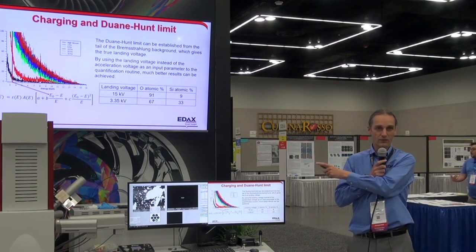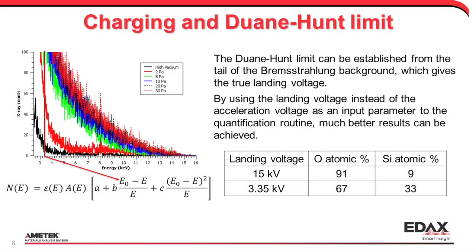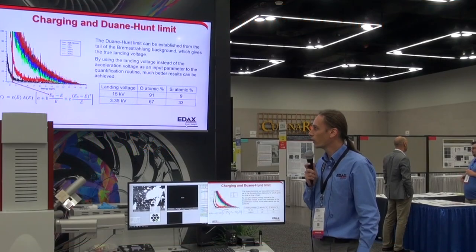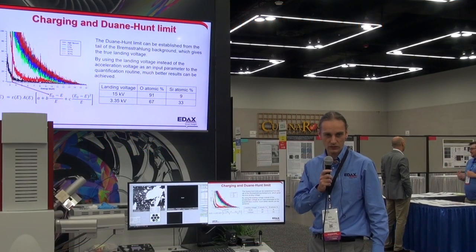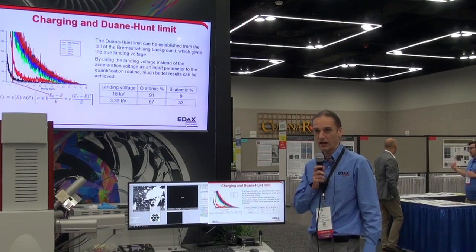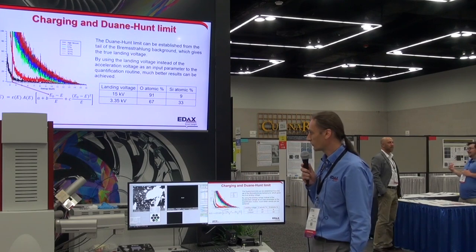If I tell our quantification model that I don't have 15 kilovolts but 3.35 kilovolts — because as we can see from the spectrum that's the Duane-Hunt limit — all of a sudden I get reasonable quant numbers: silicon dioxide at 66/33. So 3.35 kilovolts is around where my actual landing voltage is, not the 15 we thought we had based on the actuation voltage. And you can easily see this just by looking at the tail of the background.